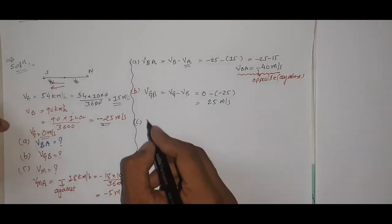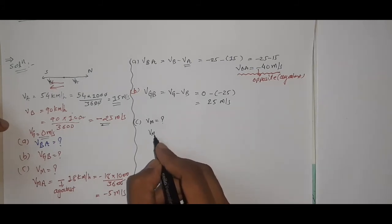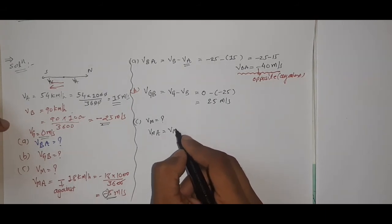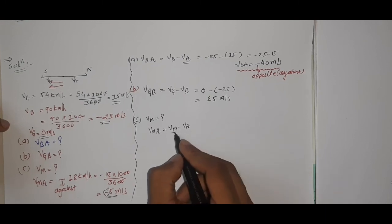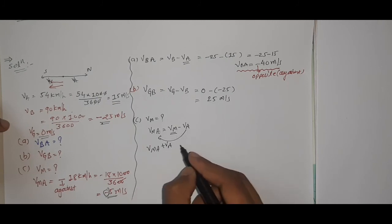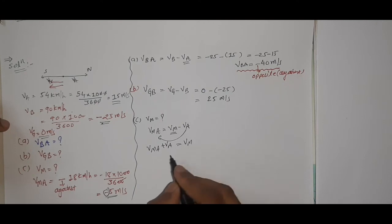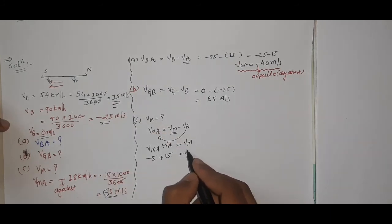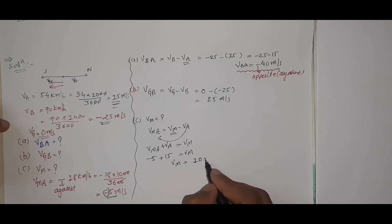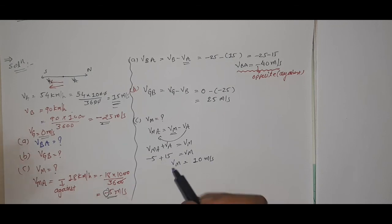Part (c): define velocity of monkey with respect to the ground. The data given is velocity of monkey with respect to train A, which is −5 m/s (against the motion). Using vMA = vm − vA, rearranging: vm = vMA + vA = −5 + 15 = 10 meter per second. So the velocity of the monkey with respect to ground is 10 meter per second.